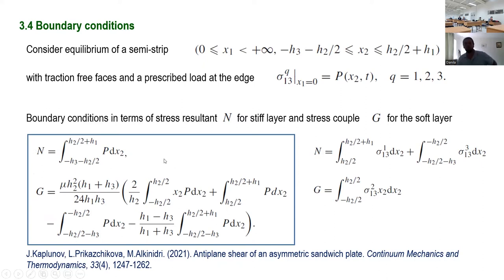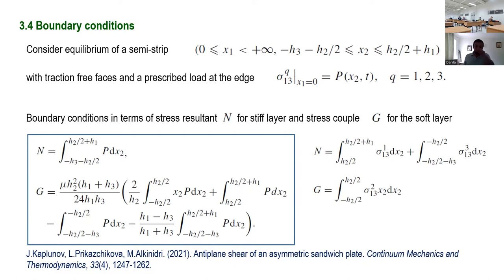We also needed another boundary condition because we had two modes in the long wave low frequency region. The first is formulated in terms of the stress resultant for the stiff components. The second is formulated in the form of stress couple for the softer components — here is the formula for G — that is the second boundary condition. So the problem is reduced to a lower dimensional model with these appropriate boundary conditions. They could also be verified through integral transforms: the second condition corresponds to vanishing the contribution of an associated pole corresponding to a slowly decaying boundary layer.